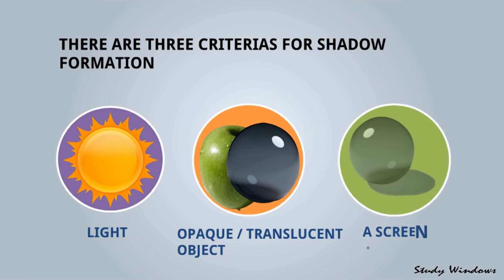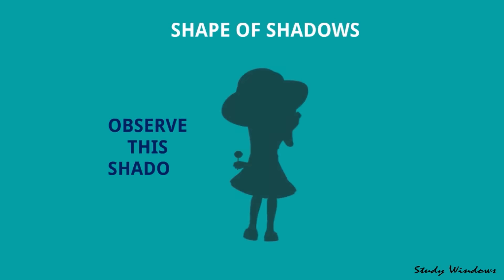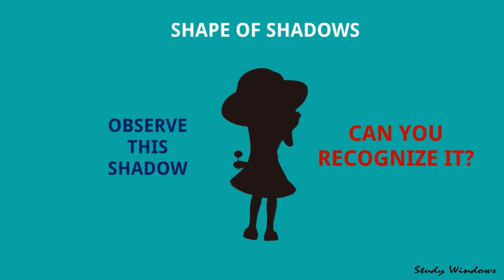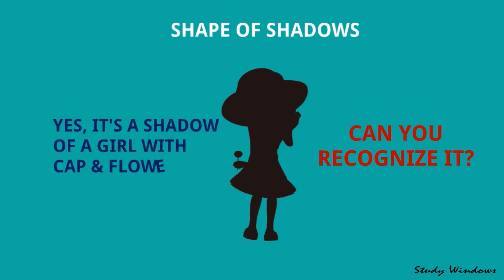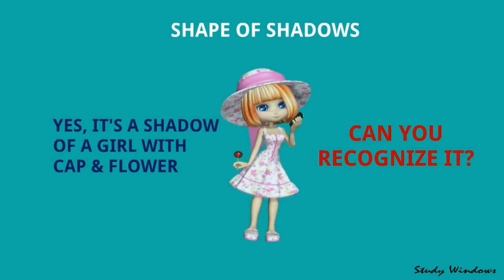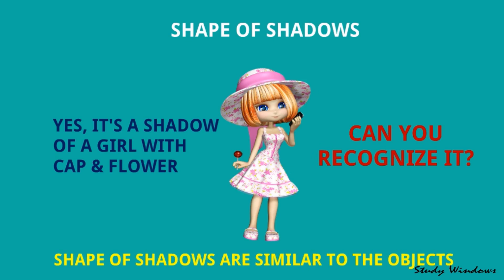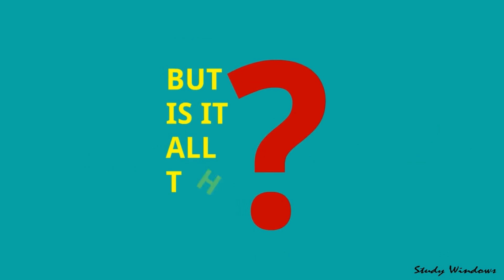Shape of shadows - let us observe this shadow. What do you think, what is this? Can you recognize it? Yes, it's a shadow of a girl with cap and a flower. Yes, here it is. So shape of shadows are similar to the object. But is it all the time?